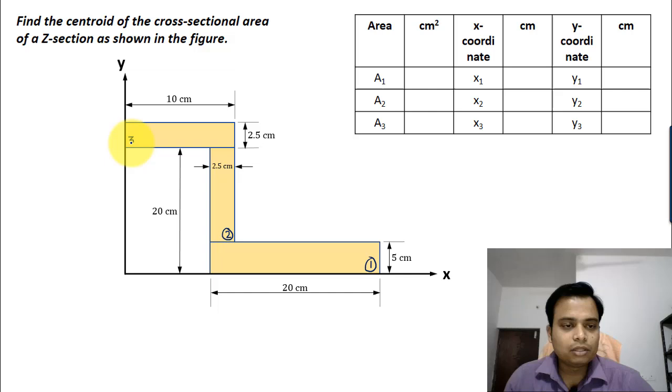Let's say this is rectangle number one, this is rectangle number two, and this over here represents rectangle three. Now the first step is to calculate their individual areas. That's pretty easy. As far as rectangle one is concerned, its length and breadth are 20 and 5.